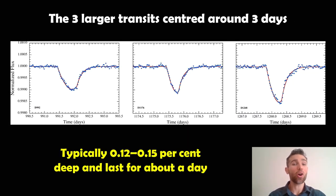Now the three largest ones are shown here. Typically this blocked out between 0.12 and 0.15 percent of the actual brightness of the star. They're relatively deep. We can see them quite well. The signal to noise ratio is pretty good. And they last about a day, which is relatively long actually.